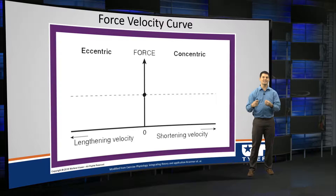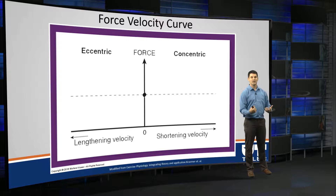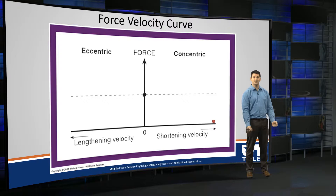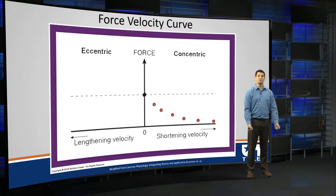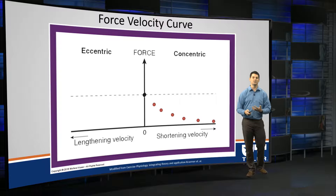If we start in the bottom right of this graph, the far right would be the fastest velocity at which we can create a movement, and of course that is going to take place at the least amount of force. Going back to our classic bicep curl, the fastest you can generate that movement will be at zero force. If we then added two pounds onto that dumbbell and tried to lift it again, we could still move it pretty fast, but slightly slower. As we continue to add weight, the harder that contraction is to generate, the slower we're able to move that load, and therefore our shortening velocity moves closer to zero.